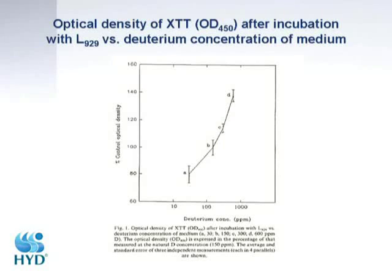The very first experiment used L929 cell lines. At normal deuterium level versus 30 ppm, we could see that deuterium depleted water or media inhibited cell growth. We also observed that slightly increasing the deuterium concentration could stimulate cell multiplication.